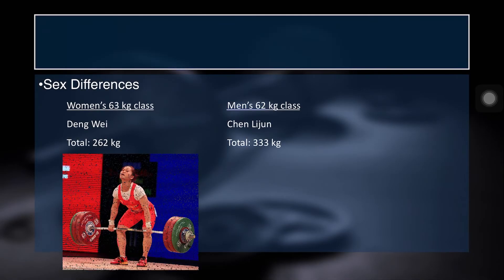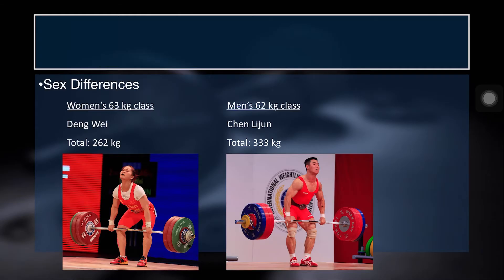Here's another example from the sport of weightlifting. Dang Wei, at a body weight of under 63 kilos, could total 262 kg — quite impressive. At a similar body weight, Chen Lijun could total 333 kilos. Doing the math, Dang Wei's total is about 60 to 70 percent of Chen Lijun's, so even at the elite level there's still this difference between males and females. There is clearly a difference in body composition as well — not at all to detract from Dang Wei's accomplishment, but this illustrates the real difference between men and women.